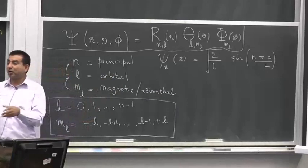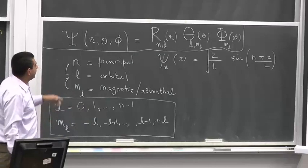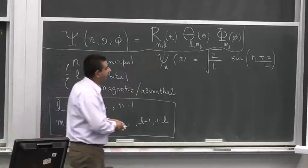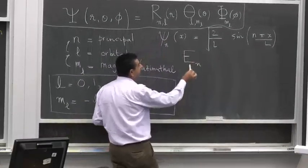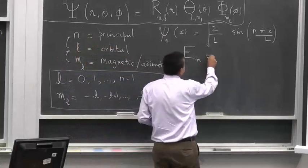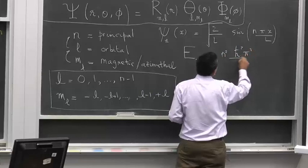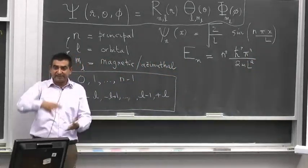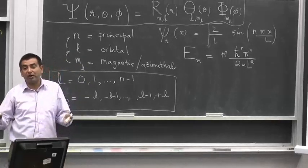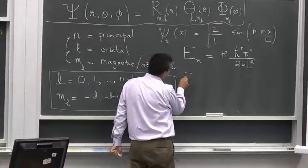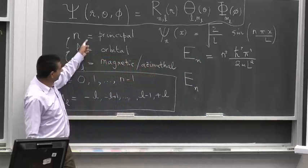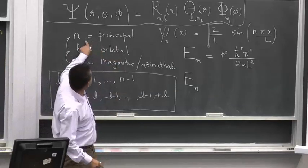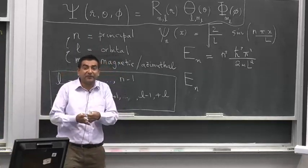What I would like to show you is that not only are these quantum numbers quantized — just as in the 1D infinite well we have quantized energies — the energies in the hydrogen atom are also quantized. In a 1D well, the energies are determined by the principal quantum number n and are given by n²ℏ²π²/(2mL²), where L is the length of the well. Likewise, in the hydrogen atom, when you solve this system, the energies are quantized and depend only on n, the principal quantum number, which is therefore the most important quantum number — it sets the energy of the levels.